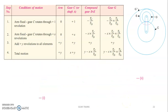This problem is also solved in R.S. Kurmi, so you can refer to that. Now we set up the table for the condition of motion. We have the arm, then gear C which is attached to shaft A, then compound gear DE, and then gear G. The speed of the arm is nothing but the speed of shaft B — keep that in mind.